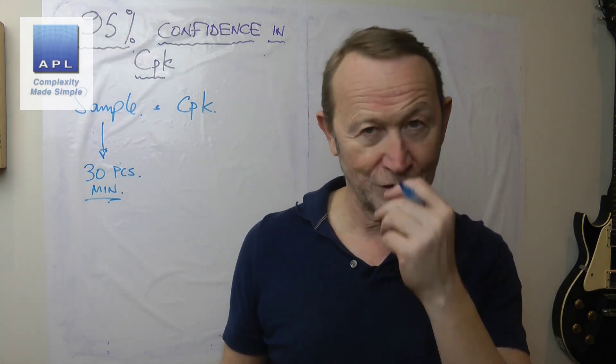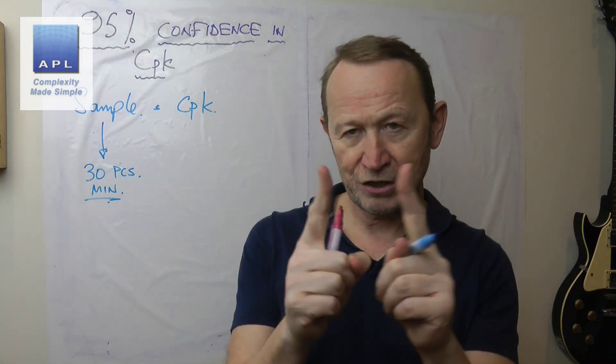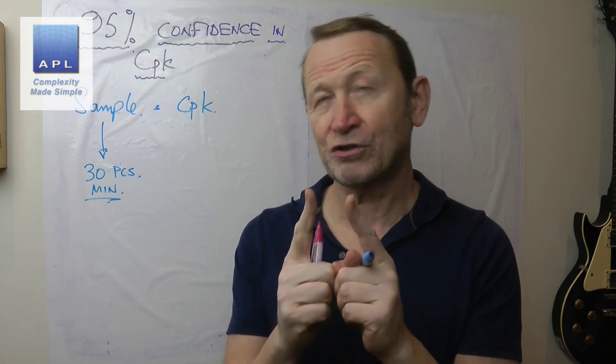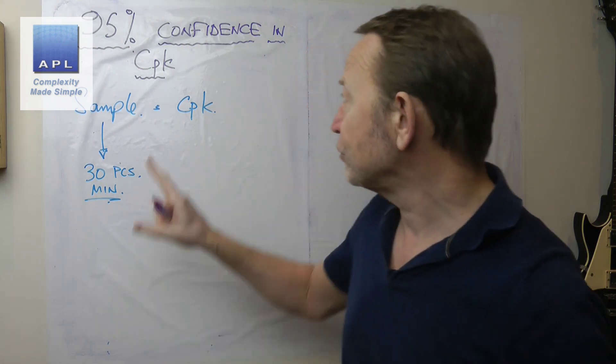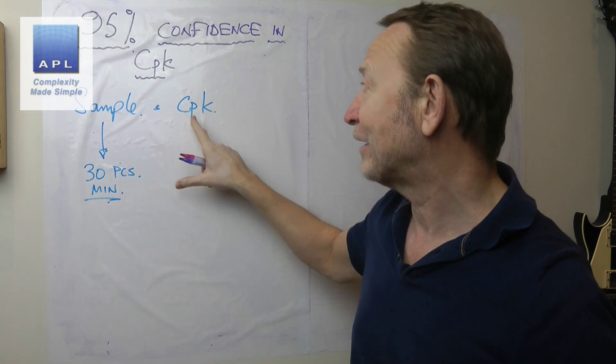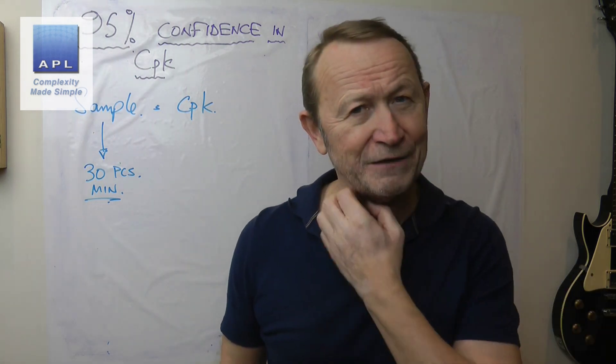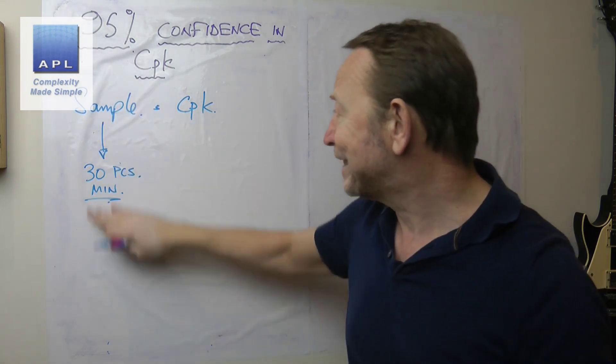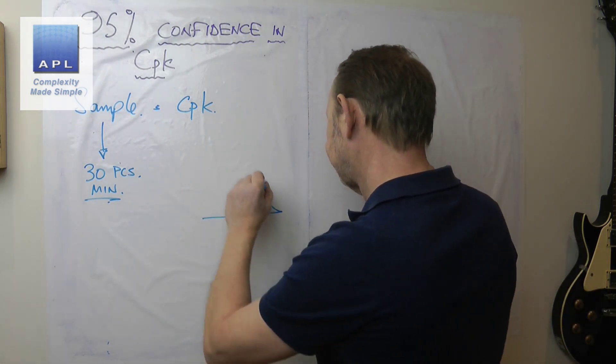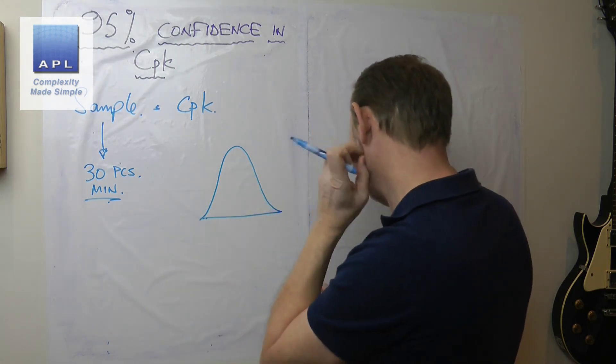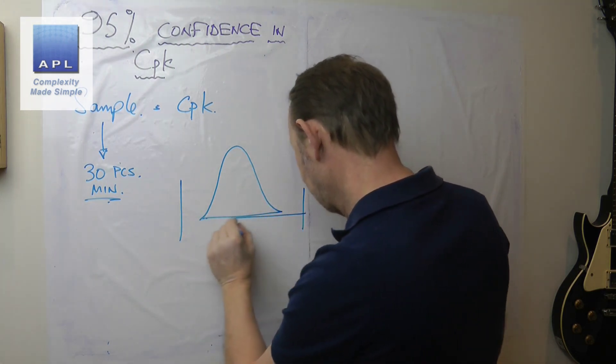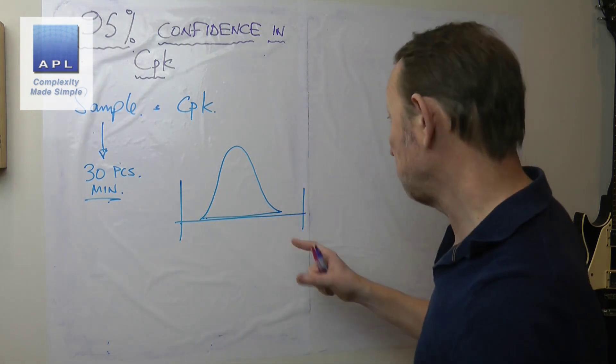By taking 30 pieces, it's a good sample size. You're probably going to get a great confidence interval on your mean, so it's going to be a nice tight confidence interval. The confidence interval for the mean has a potential impact on the CPK. We collect the data and work out the CPK.